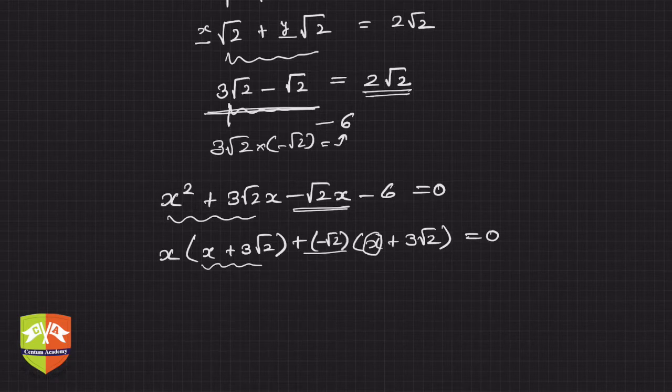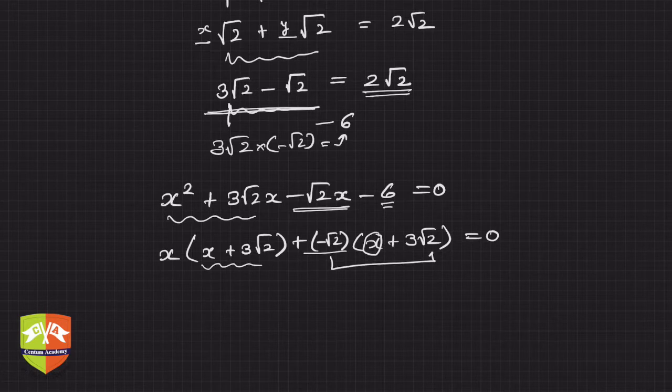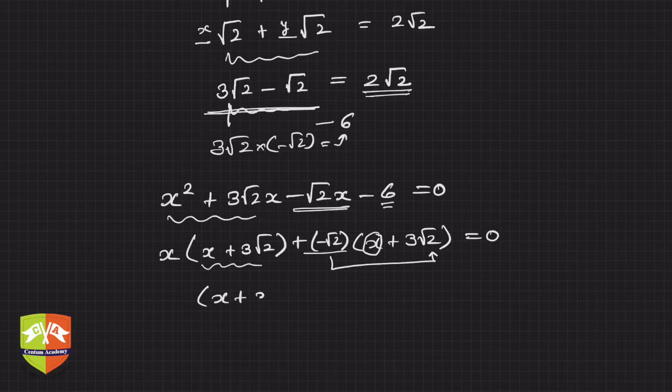If I multiply here -√2, then we'll get -√2x, and the other will automatically come. This -6 will automatically come. How? -√2 times 3√2, you see, is -6. So our job is done.